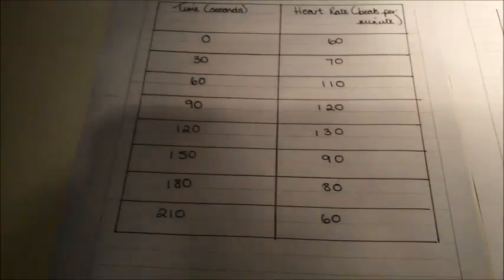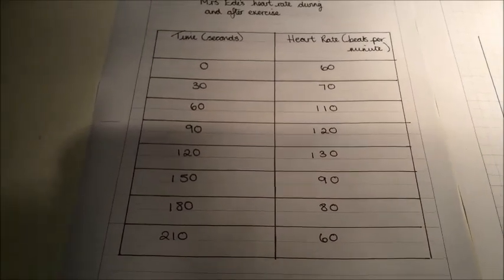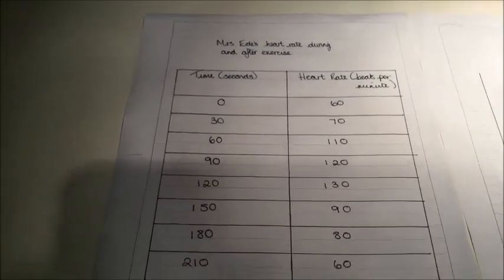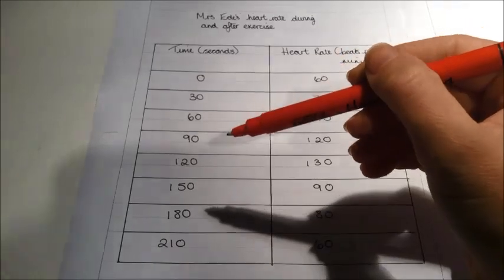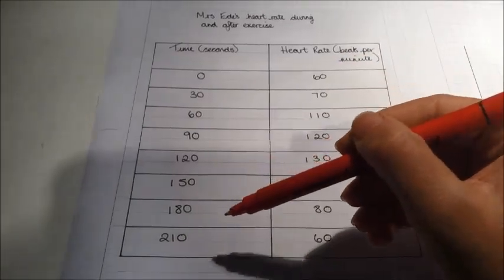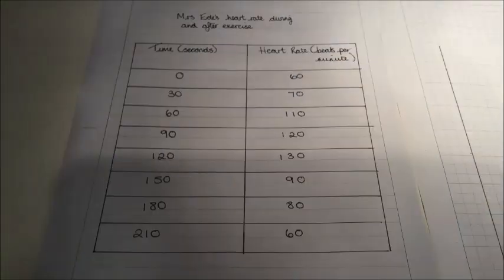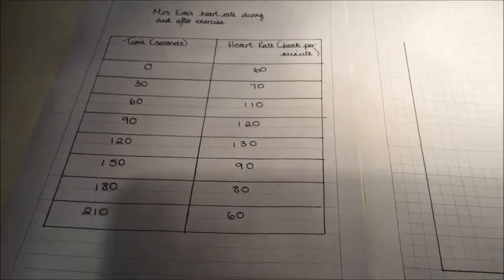When you've done that, you then need to figure out the scale for your axes. So let's go back to our information. Our time in seconds goes all the way up to 210, and it jumps up in groups of 30. Overall we have one, two, three, four, five, six, seven, eight pieces of information that we will need to insert.